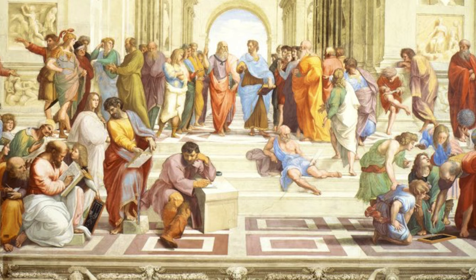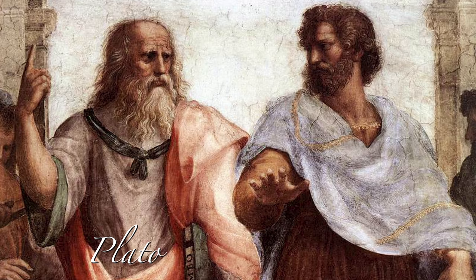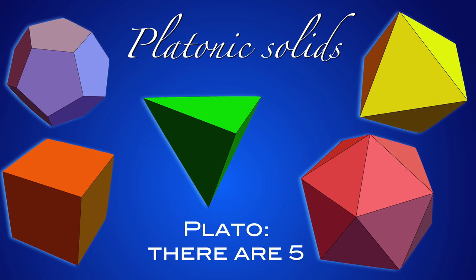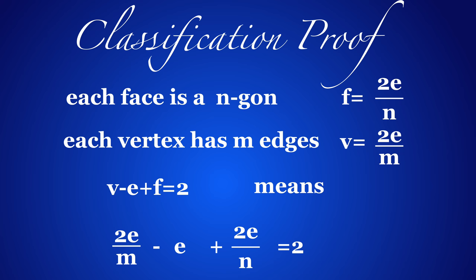The story goes back to the Greeks, in particular to Plato, who introduced regular platonic solids. The five platonic solids are the cube, the dodecahedron, the tetrahedron, the octahedron, and the icosahedron. I want to spend some time on the classification proof — it's not that easy, but very nice.